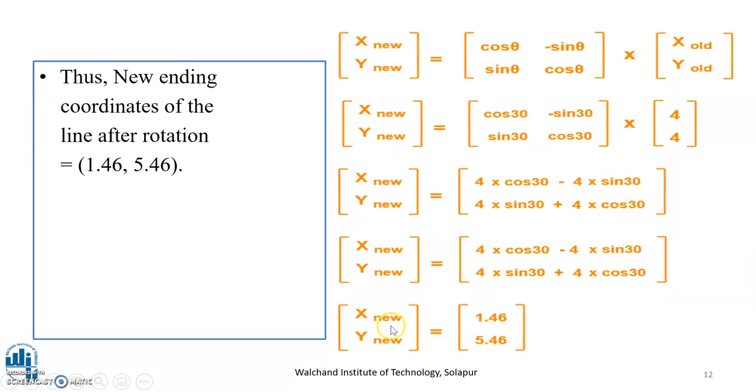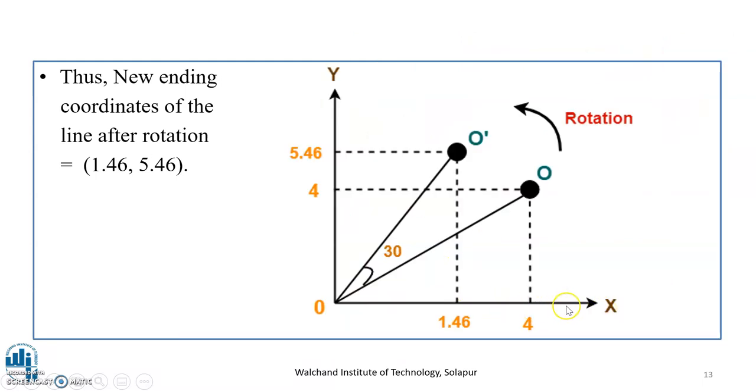Therefore, we have obtained X-new equal to 1.46 and Y-new equal to 5.46. Diagrammatically, this was the initial point which had ending 4, 4, with 0, 0 as the first point and the ending point as 4, 4. After rotation with an angle of 30 degrees, you have the new point, X-new as 1.46 and Y-new as 5.46.